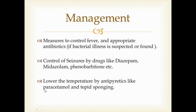If a child presents to you in the emergency in a convulsive state, the first step is oxygen and ABC, then lateral position to avoid aspiration. Then establish an IV line and administer an anticonvulsant such as diazepam or midazolam, and sometimes phenobarbitone is needed as well. After controlling the seizures, lower the temperature by giving intravenous or rectal paracetamol along with tepid sponging.